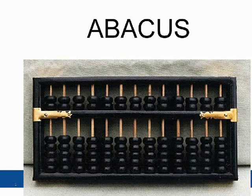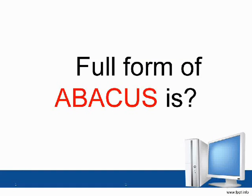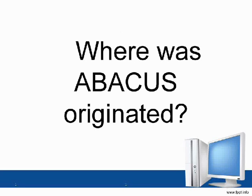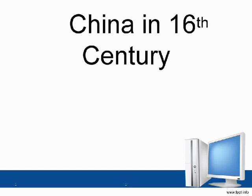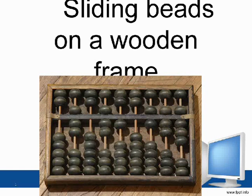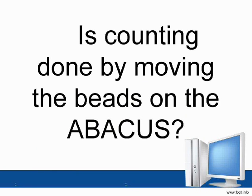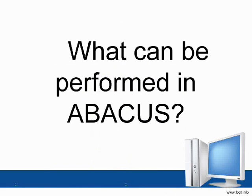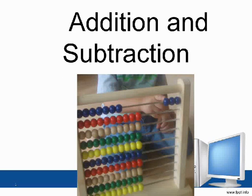Abacus. The full form of abacus is Abundant Beads Addition and Calculation Utility System. Where was abacus originated? China in the 16th century. It has sliding beads on a wooden frame. Counting is done by moving the beads. Addition and subtraction can be performed on the abacus.